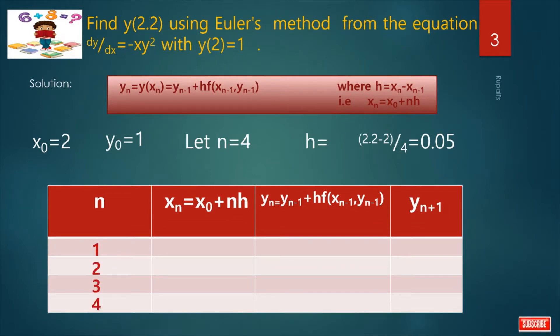What is x1? It is x0 plus 1 into h and after giving the value x0 as 2 and h as 0.05 I get the value x1 as 2.05. In this way what is x2? x2 equals to x0 plus 2 into h. After calculation I get the value. Then x3 equals to x0 plus 3 into h, and x4 is x0 plus 4 into h and after calculation I get the value.